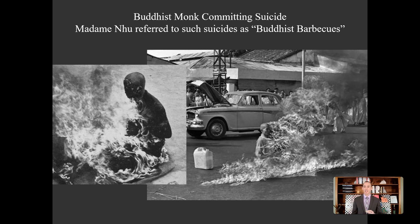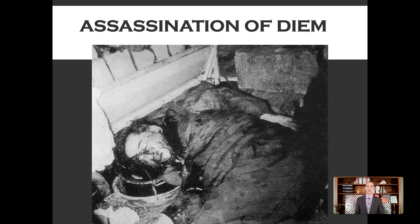Diem's government was corrupt. The United States provided them with tons of money to build up the South — to win the hearts and minds, build schools, build roads, make people's lives better. But Diem's government used the money to enrich themselves. It was a very corrupt system. It got to the point that the CIA was so sick of Diem that they made it very clear to the South Vietnamese army they were okay with Diem being taken out. So in 1963, Diem was thrown into the back of a van and he was assassinated.